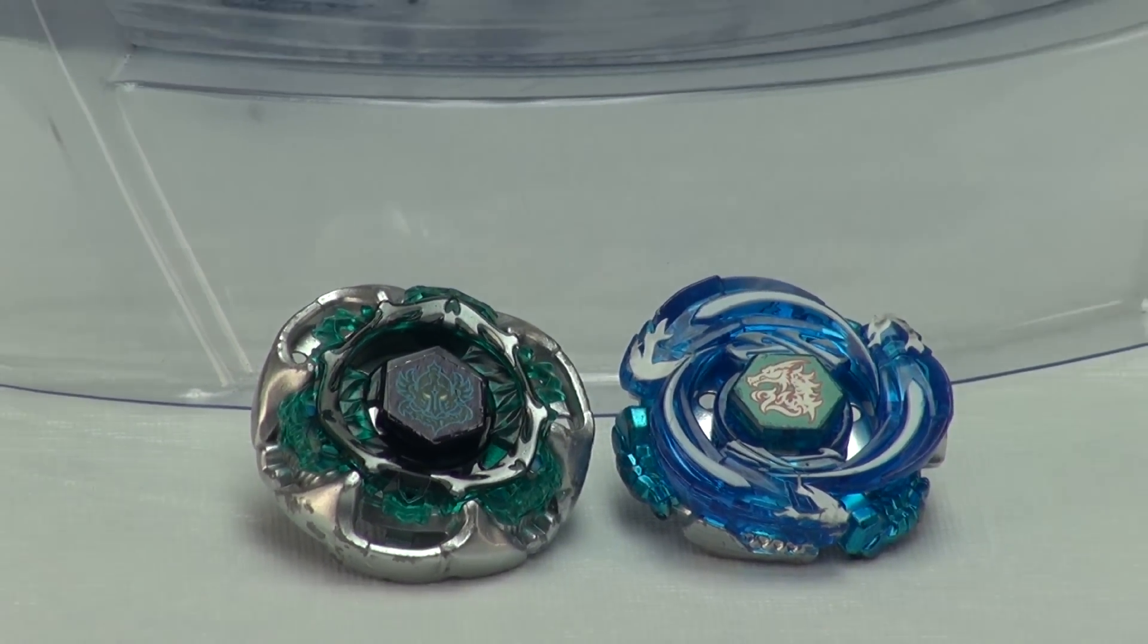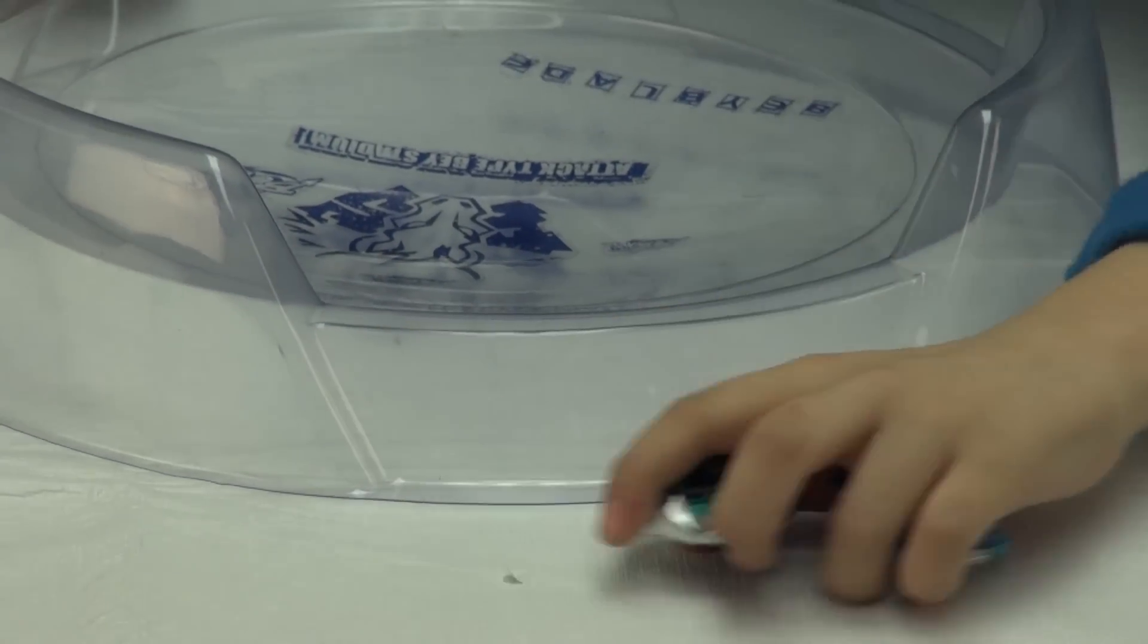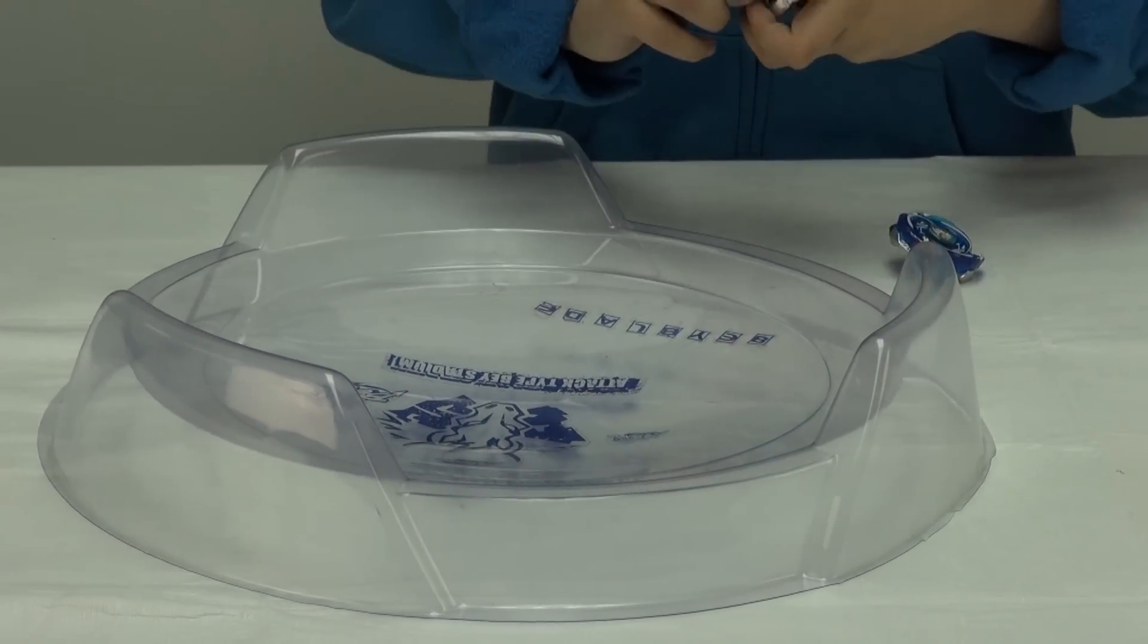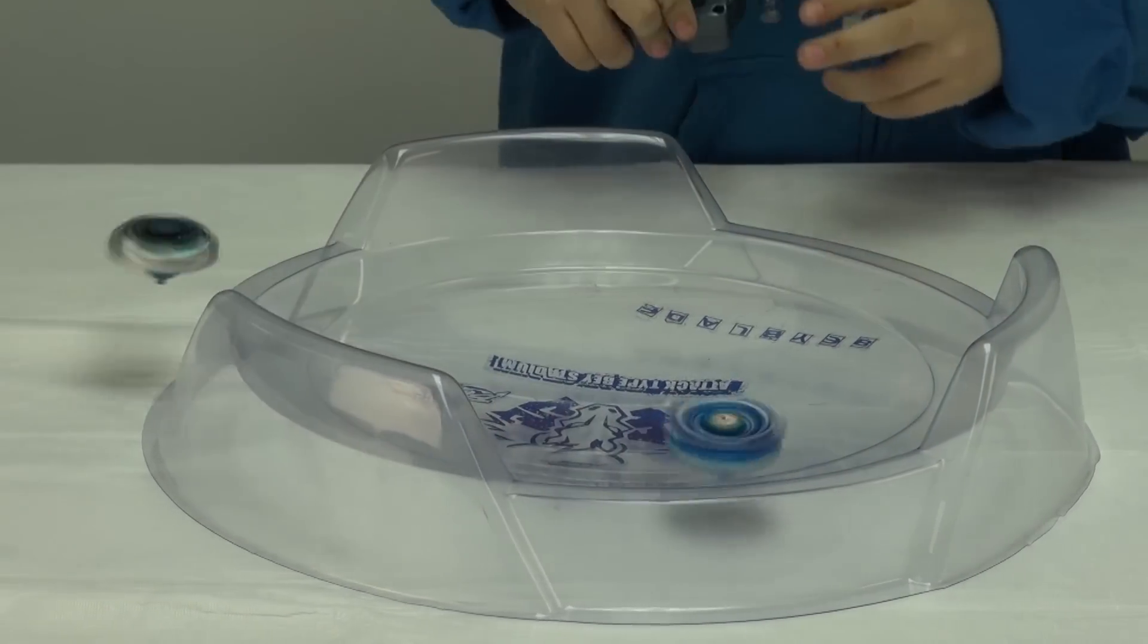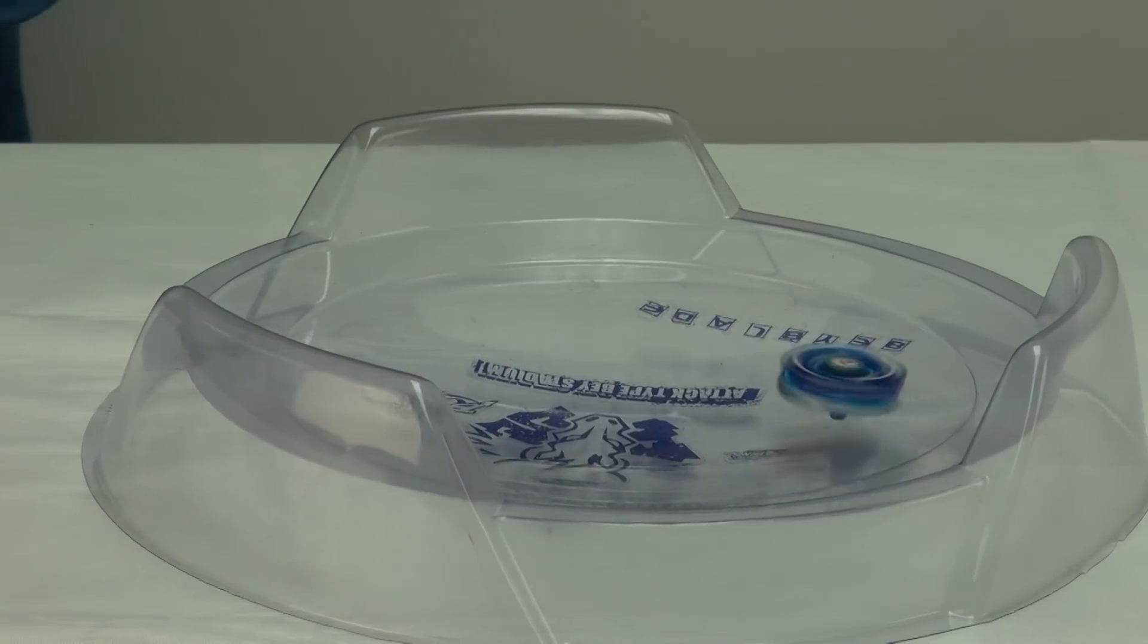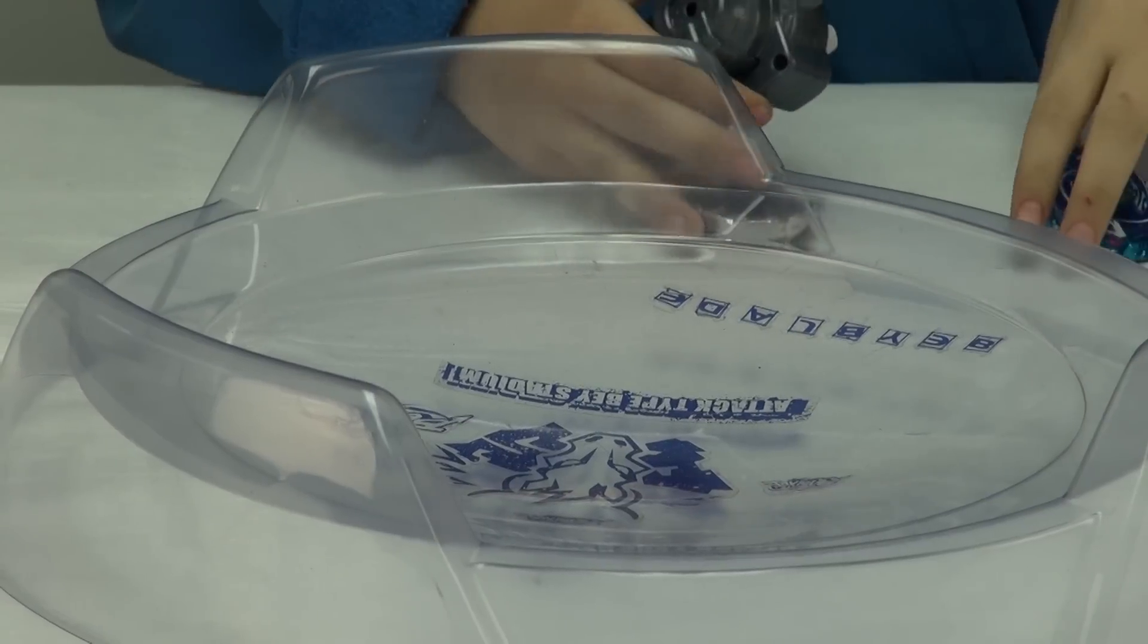We'll be doing the Attack-Type Stadium and I'll first launch the Ultimate Gravity Destroyer Attack. Oh! Ultimate Medio Drag O-Attack wins so the score is now one-zero.